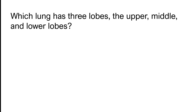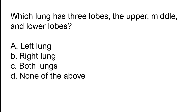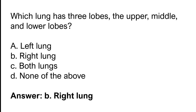Which lung has three lobes — the upper, middle, and lower lobes? Left lung, right lung, both lungs, none of the above. The correct answer is option B. The right lung has three lobes: the upper, middle, and lower lobes.